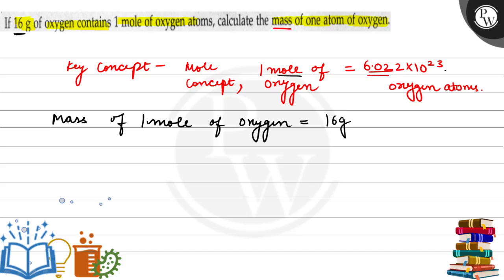And we know that 1 mole of oxygen is equal to Avogadro's number. So that means mass of 6.022 into 10 to the power 23 oxygen atoms